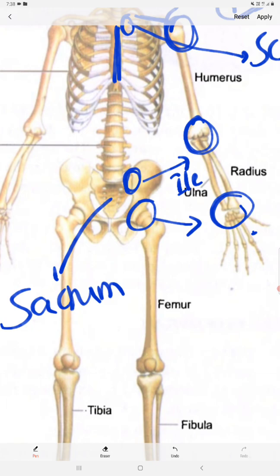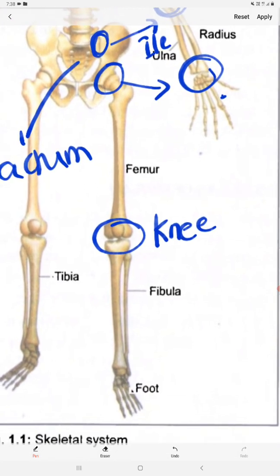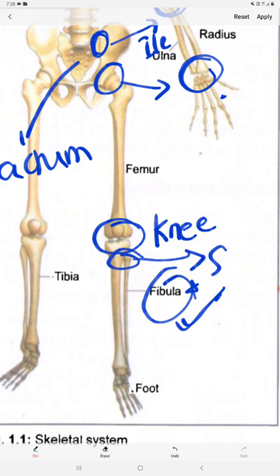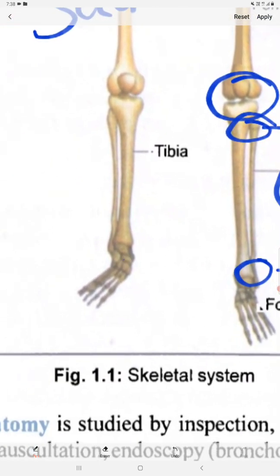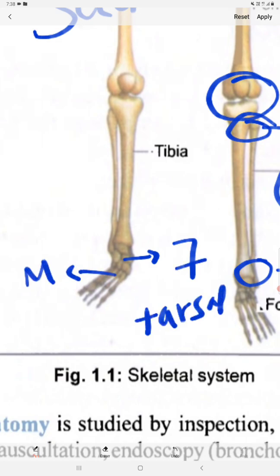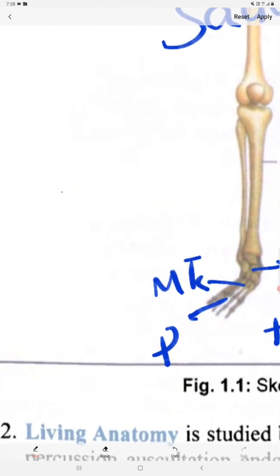This is the knee joint — a very important joint formed between the femur and the tibia. Remember: the fibula does not involve in the knee joint. The fibula only articulates with the tibia — forming the superior tibiofibular joint and the inferior tibiofibular joint. Similar to the hand, the foot has seven tarsal bones, metatarsals, and phalanges.